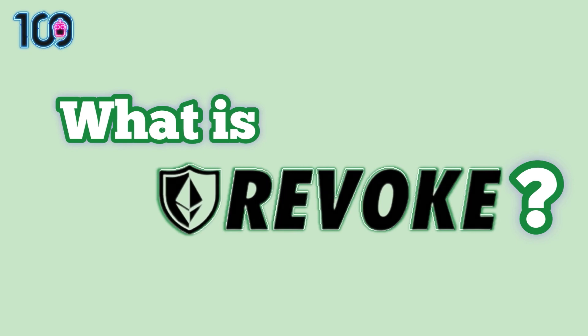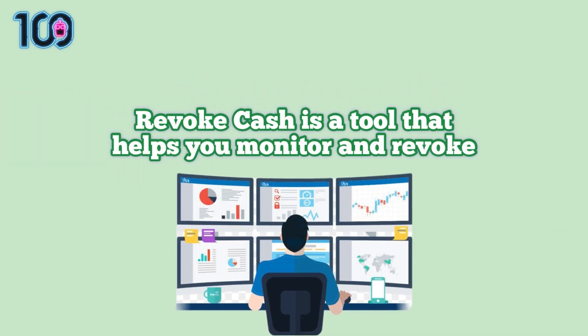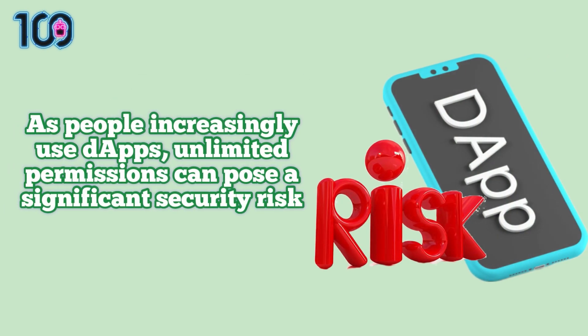Revoke Cash is a tool that helps you monitor and revoke active token allowances that you have approved for any of the tokens inside your cryptocurrency wallet. As people increasingly used apps, they accumulate more and more approvals for various tokens. Since these approvals usually come with unlimited permissions, they can pose a significant security risk.